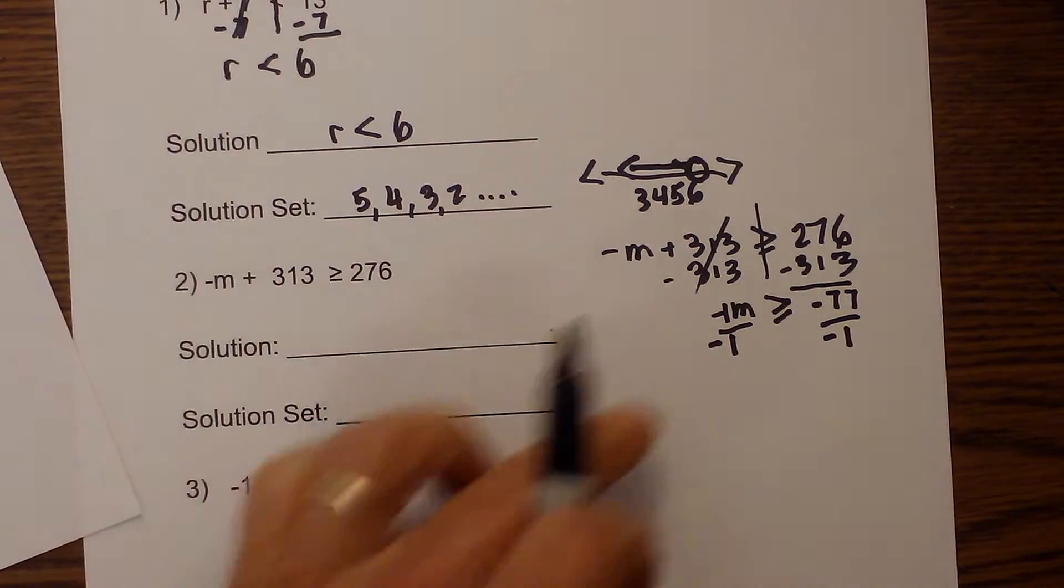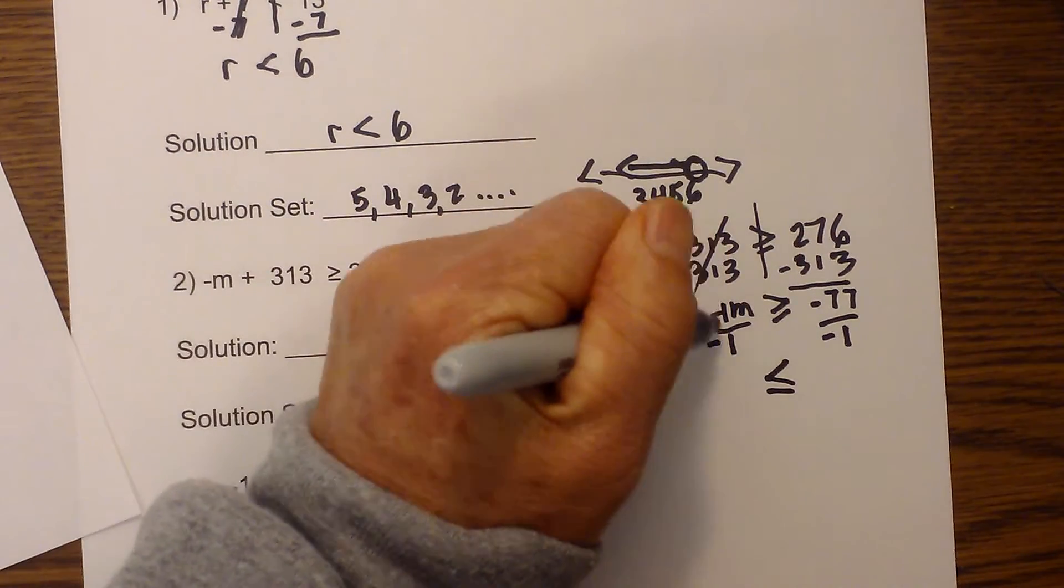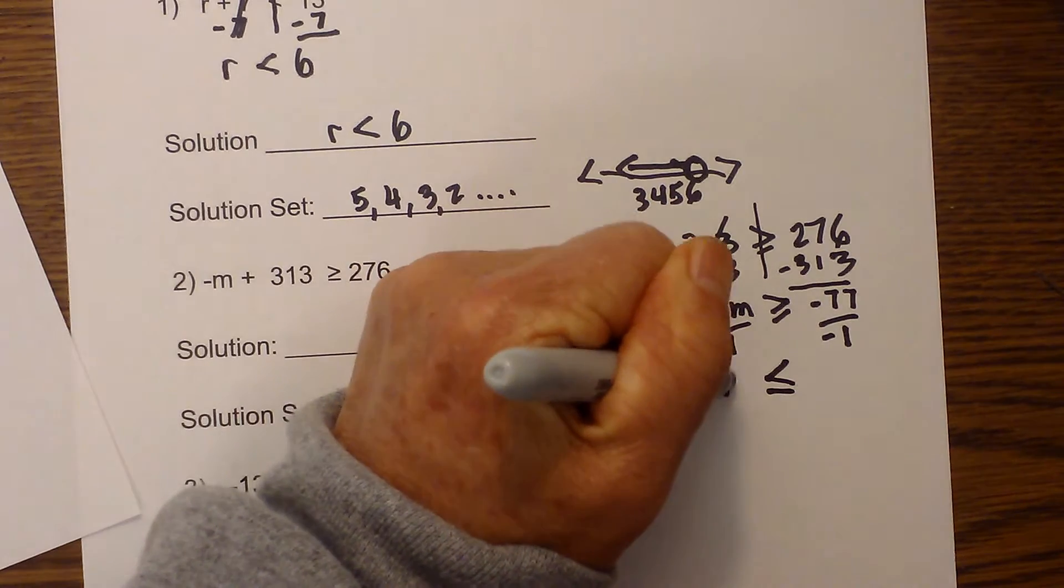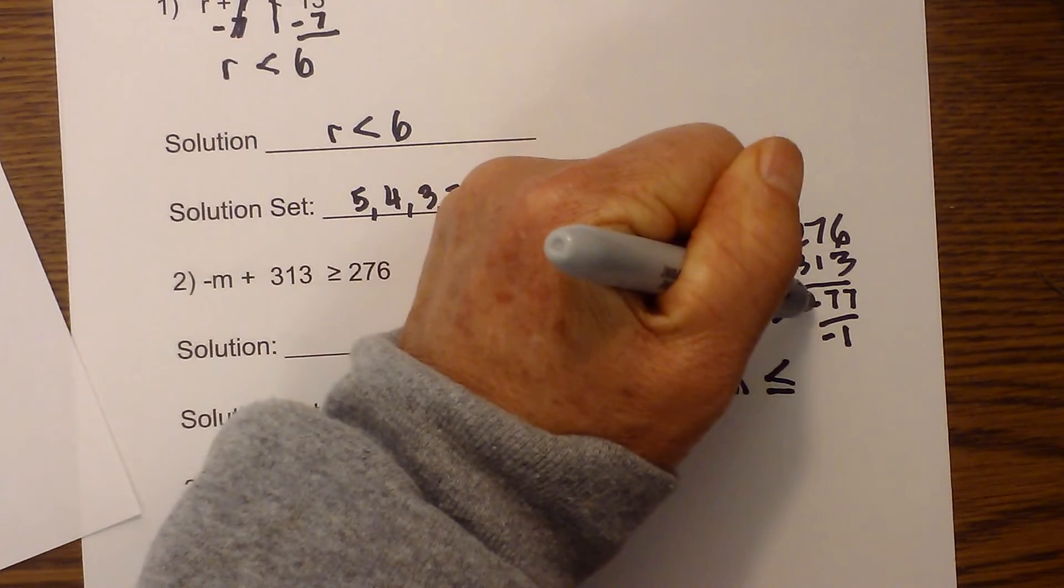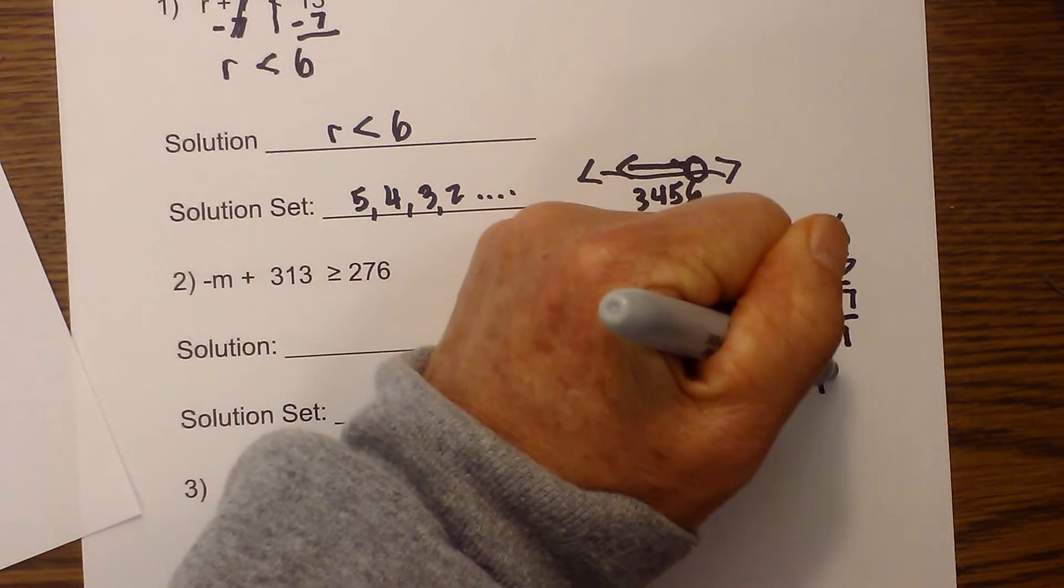And remember, when you divide by a negative, you switch the sign. So I will switch the sign. These cancel. This becomes m, and minus 77 divided by negative 1 equals 77.